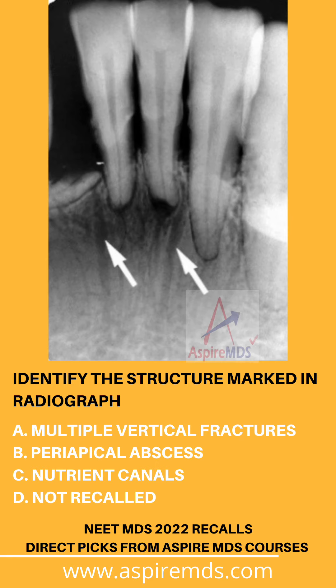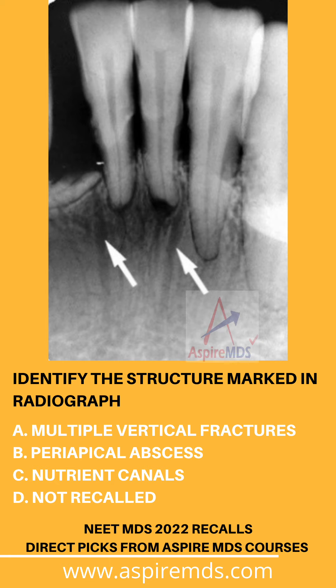Welcome to this question and answer series discussing NEET MDS 2022 recalls. Here is one more question, a direct pick from the Aspire MDS question bank provided in our online course. The question shows a radiograph with structures marked by white arrows — radiolucent lines going downwards from the periapical region of mandibular anterior teeth. The options include multiple vertical fractures, periapical abscess, and nutrient canals. The fourth option was not recalled; however, the answer to this question is nutrient canals.